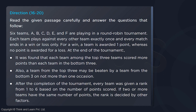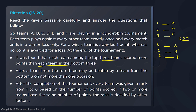It was found that each team among the top three teams scored more points than the bottom three. So if I have top three and bottom three — this is A, B, C and X, Y, Z in order, rank 1, 2, 3, 4, 5, 6 — it basically means C is greater than X. Now X may or may not be equal to Y, Y may or may not be equal to Z, but definitely X is the highest among Y and Z.